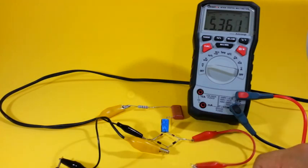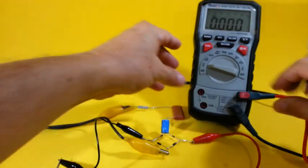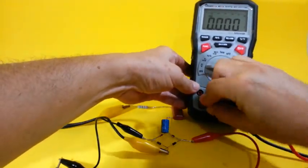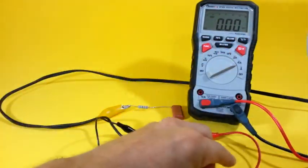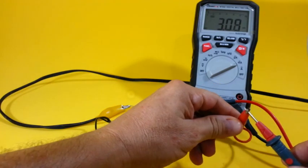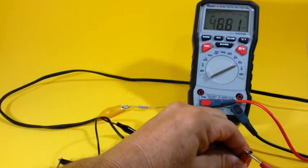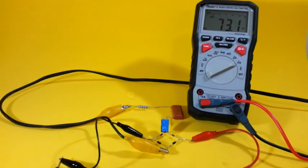Now let me check the short circuit current. As we can see, the maximum current that the circuit can provide is 73 milliamps.